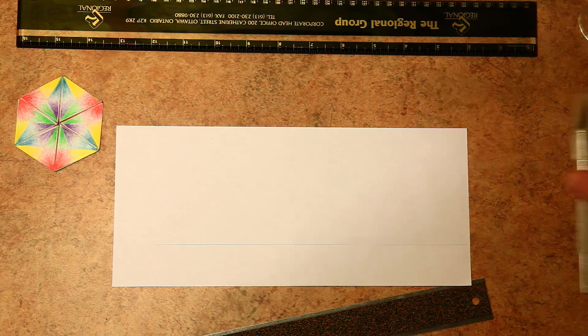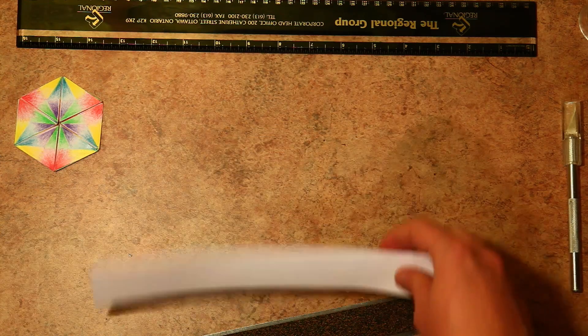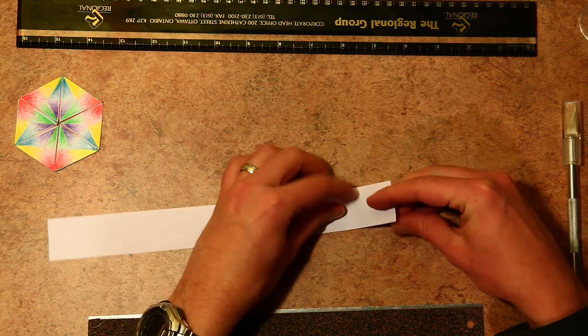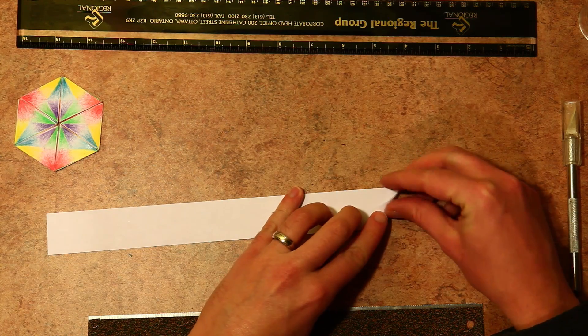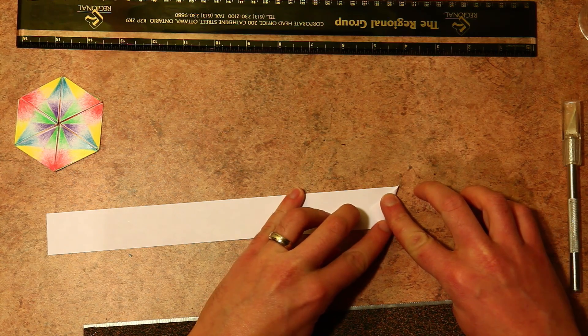Now here's a tip to get a 60 degree angle from a 90 degree one. You need to fold this section over here in thirds, and then fold it over, and that should form a nice triangle.